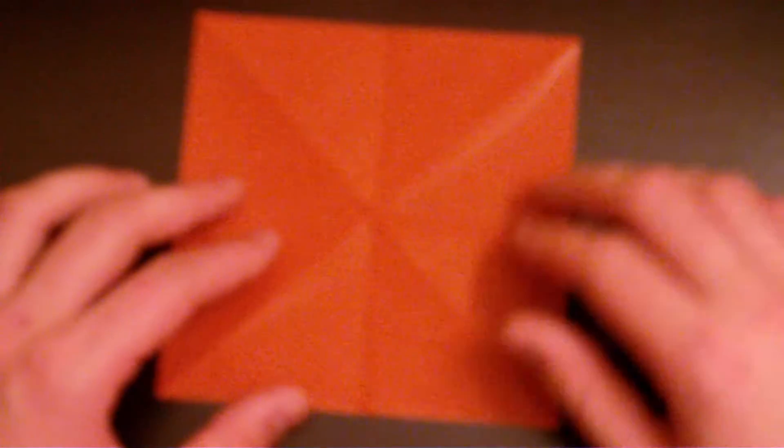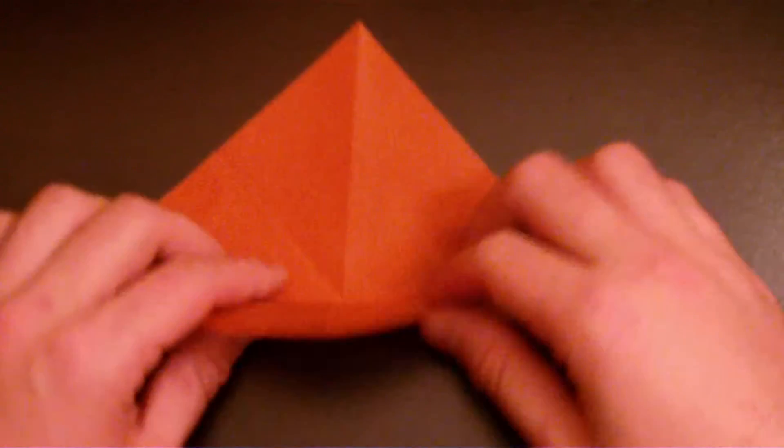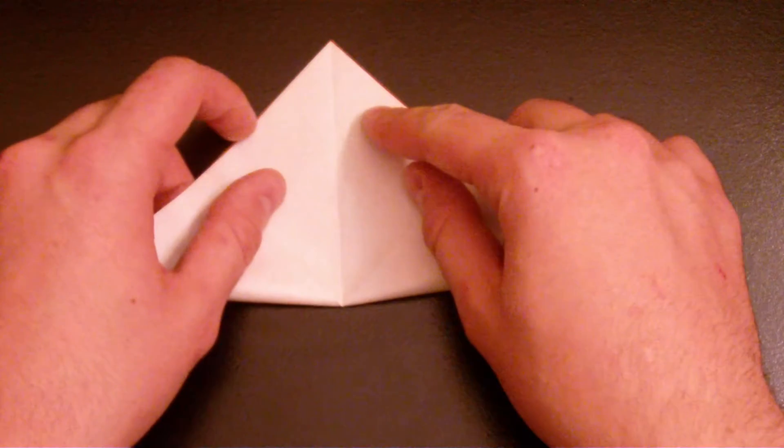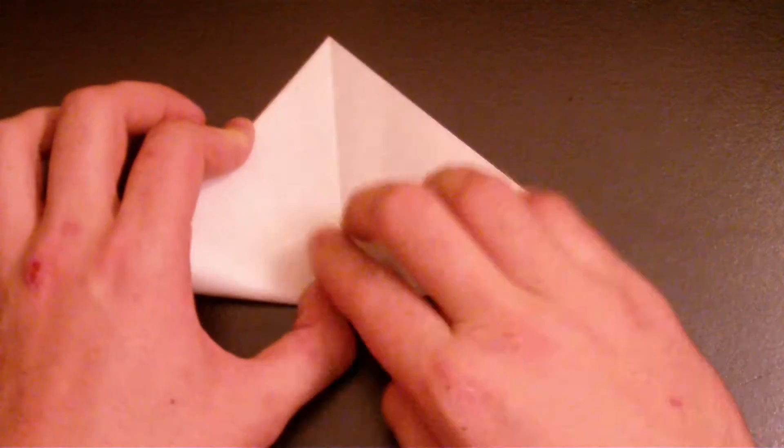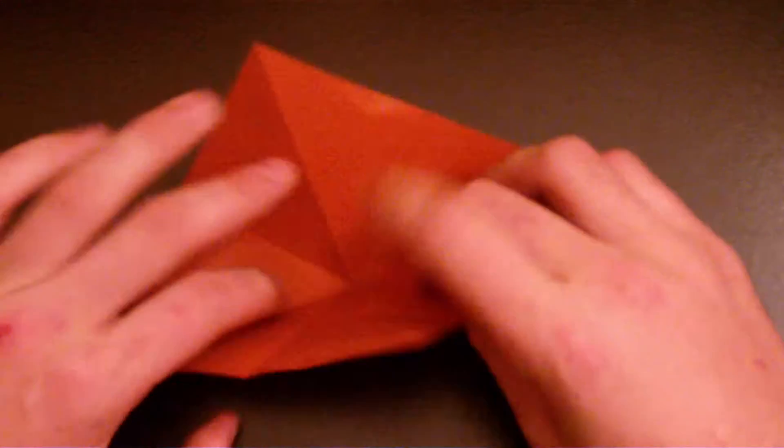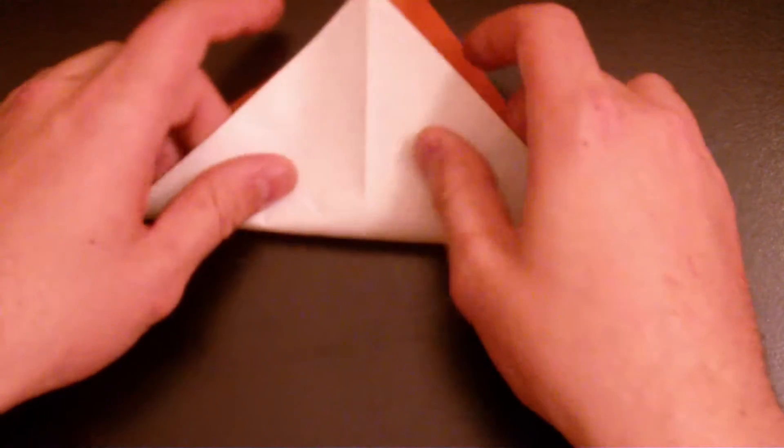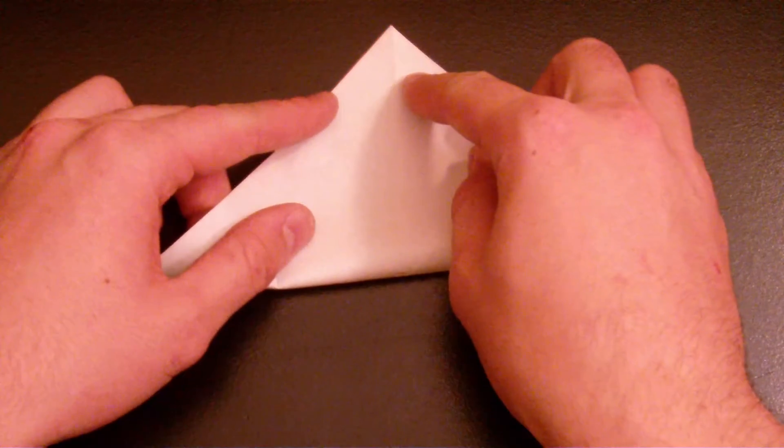Got a square piece of paper. Bring two corners together, fold it, unfold, bring two other corners together.